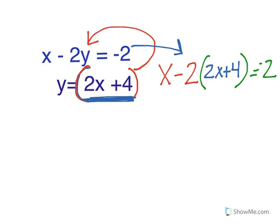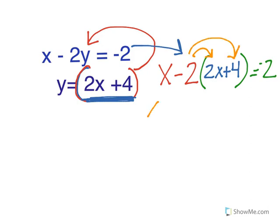And then this is going to get me to solve for x. If I plug in for y, I have all x's, so I'm going to solve for x. To solve for x, you have parentheses so you have to distribute. Negative 2 times 2 is negative 4. Negative 2 times 4 is negative 8, equals negative 2.